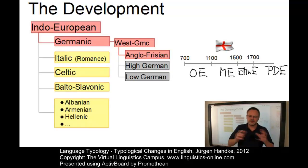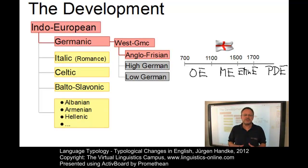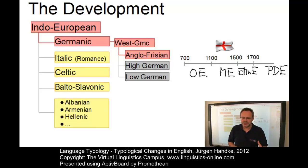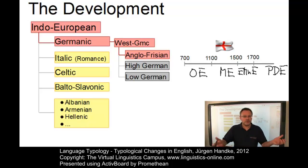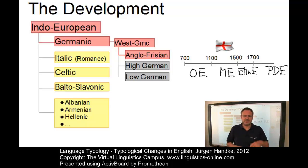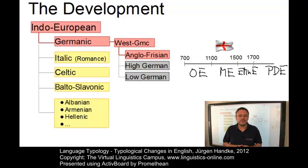The difference between these periods is due to various linguistic changes ranging from phonological to lexical, and is supported by socio-cultural events such as the Norman invasion in 1066. Let us look at the main linguistic and cultural properties of these periods.